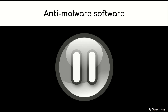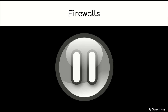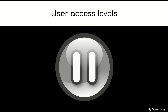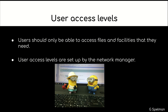Anti-malware software: software designed to prevent, detect and delete malware. Firewalls: monitors traffic coming in and out of a network, will block any unauthorised traffic. User access levels: users should only be able to access files and facilities that they need. User access levels are set up by the network manager.